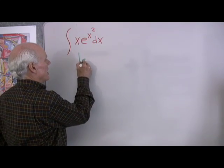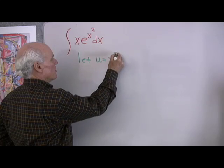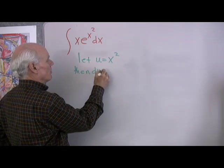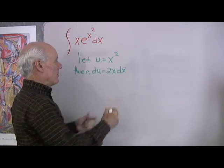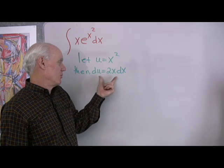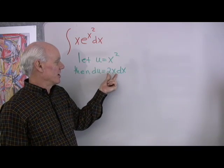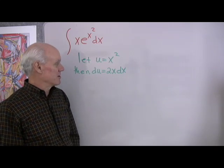Let's start by saying let's let u be equal to x squared. Then du will be equal to 2x dx, and remember all I'm doing is differentiating here and using my differentials. When I differentiate this I get 2x and then I multiply both sides by dx.